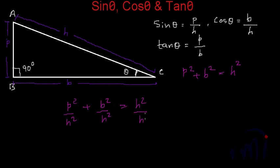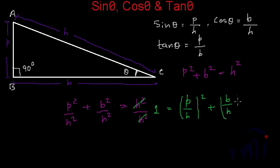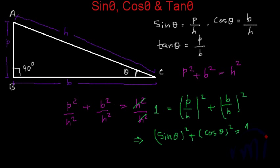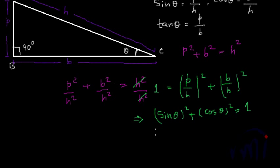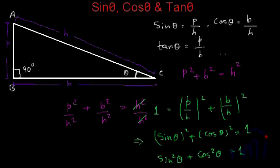H squared will cancel each other to give us 1, and this part becomes (P/H)² plus (B/H)² which is equal to 1. P by H is sin theta and B by H is cos theta. So from here we get one relation between sin and cos: sin²θ + cos²θ = 1. This is one relation between sin and cos, and now let's go back to our original drawing and derive a few more relationships.